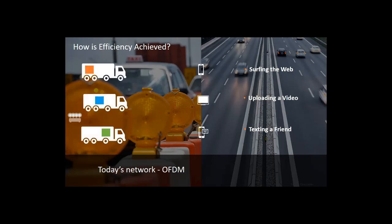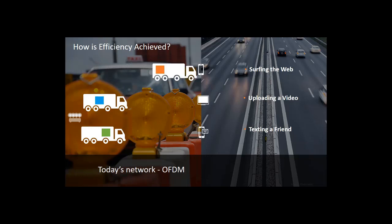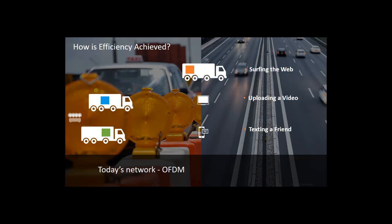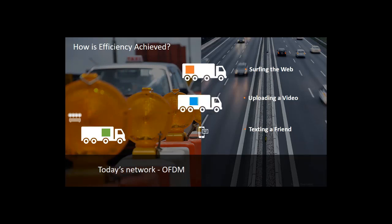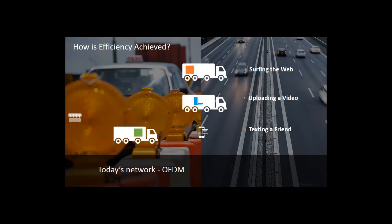Under OFDM, a device uses a fixed 20, 40, or 80 MHz of bandwidth to deliver packets regardless of whether it's transmitting video or just sending a simple text message. We'll use a truck analogy to illustrate the difference. Each truck is hauling a payload or user data — one surfing the web, another uploading video, and a third sending a text message — using three trucks of the same size regardless of how empty or full each truck is. In other words, OFDM inefficiently uses the bandwidth, leaving a lot of empty space.